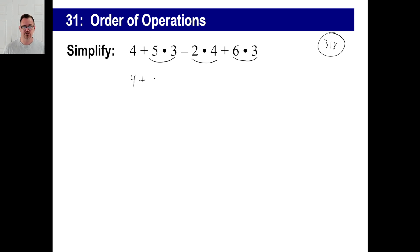So let's do it little by little. 4 + 15 - 2 × 4 is 8 + 6 × 3 is 18. So all these are pluses and minuses now. So you can just go left to right. 4 + 15 is 19. 19 - 8 is 11. 11 + 18 is 29.